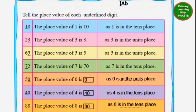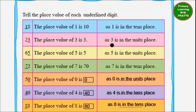Tell the place value of each underlined digit. In the number 18, the digit 1 is underlined. The place value of 1 is 10, because 1 is in the tens place. In 23, the digit 3 is underlined — place value is 3, as 3 is in the units place. In 65, digit 5 is underlined — place value is 5, units place, 5 into 1. In 72, digit 7 is underlined — place value is 70, as 7 is in the tens place, so 7 into 10 equals 70.